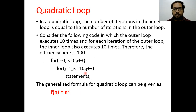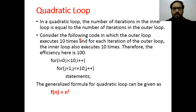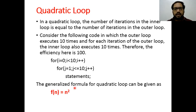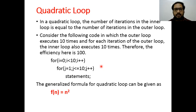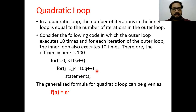Next is the quadratic loop. In a quadratic loop, the number of iterations in the inner loop is equal to the number of iterations in the outer loop — both loops are linear. Consider code where the outer loop executes 10 times and the inner loop also executes 10 times for each outer iteration, giving a total of 100. The generalized formula for quadratic loops is f(n) = n².